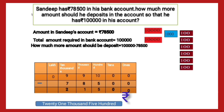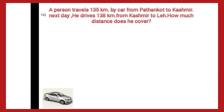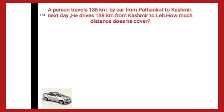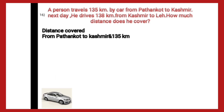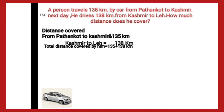Here is question number 16. A person travels 135 kilometers by car from Pathankot to Kashmir. The next day he drives 138 kilometers from Kashmir to Leh. How much total distance does he cover? We will write it as: distance covered from Pathankot to Kashmir is 135 km, and from Kashmir to Leh is 138 km. We have to find the total distance covered.